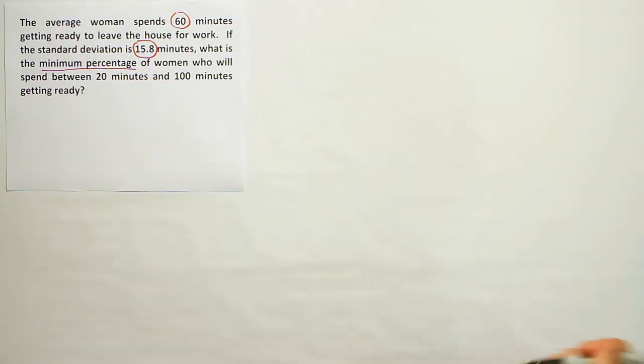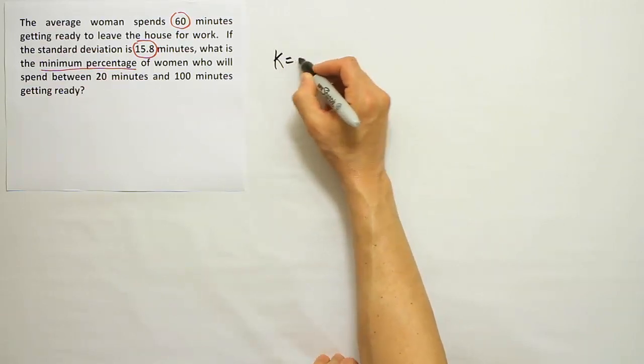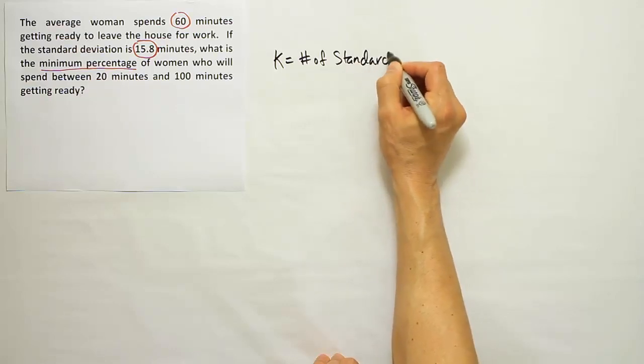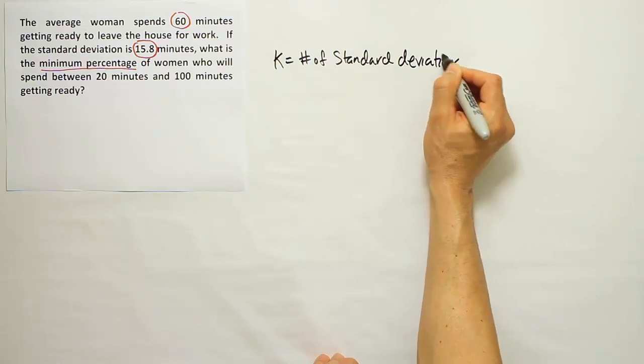Once again, if you think it's Chebyshev's theorem, your first task is to find k. So remember, k is equal to the number of standard deviations above the mean.